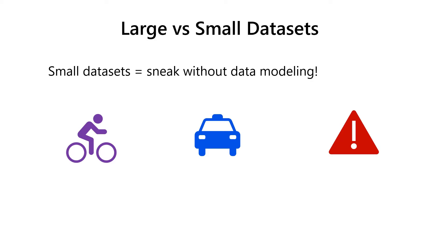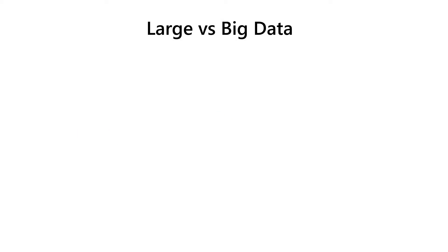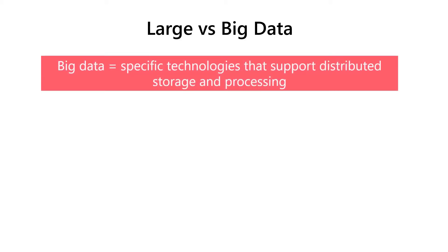While big data is usually related to a specific set of technologies that rely on distributed processing such as Hadoop a decade ago, Apache Spark, and the majority of modern cloud data warehouses, large data refers to a huge number of records in the dataset. There is no golden value like 100,000, 100,000,000, or 1,000,000,000 records. But in most cases, datasets with less than 1,000,000 rows are not considered large.